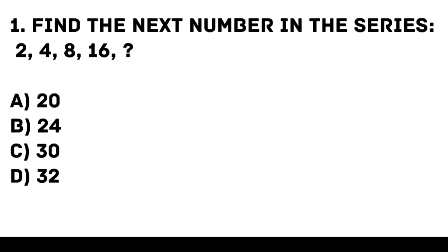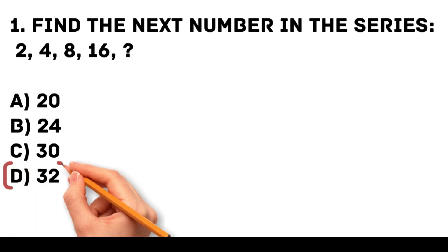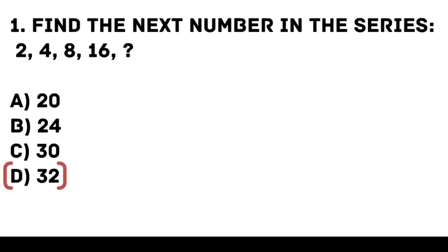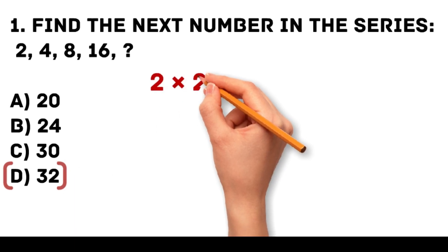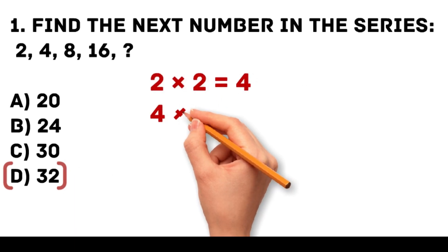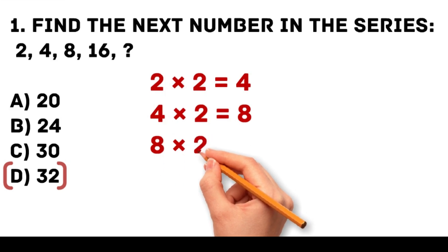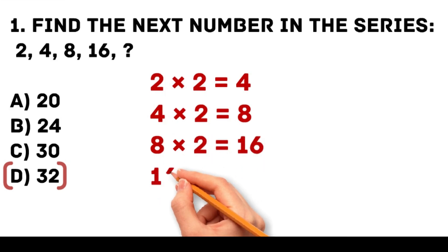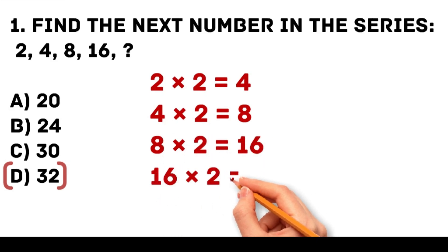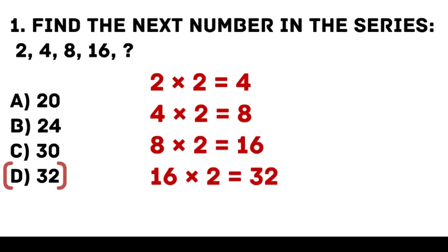Answer: D. 32. Each number in the series is multiplied by 2 to get the next number. 2 times 2 is equal to 4. 4 times 2 is equal to 8. 8 times 2 is equal to 16. 16 times 2 is equal to 32.